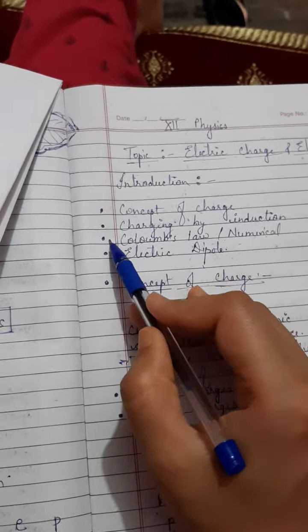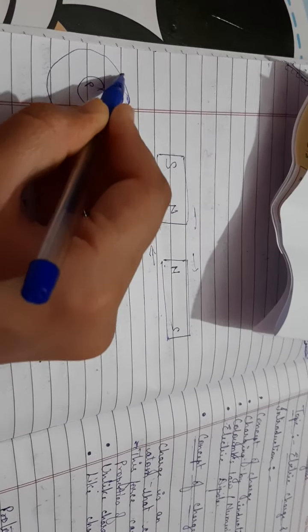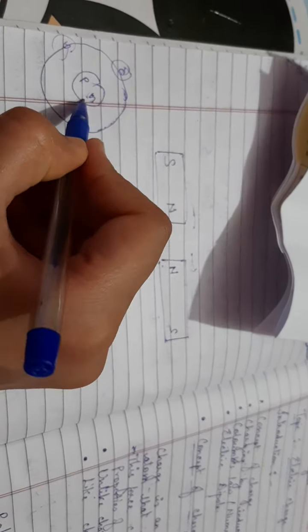Now moving to the first topic, the concept of charge. As we know, the smallest particle is the atom. We have already learned according to Rutherford's theory that atom consists of electron, proton, and neutron. The whole mass of the atom is inside its center, known as the nucleus. This nucleus consists of proton and neutron, and electrons revolve around the nucleus in different shells. Proton has positive charge, neutron has neutral charge, and electron has negative charge. Electron, proton, and neutron are called fundamental particles.